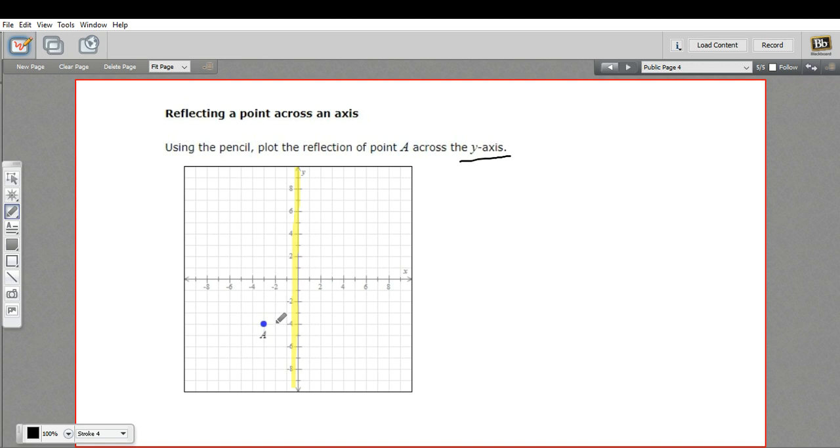So we've got a distance of one, two, three units to get to the surface of the mirror. So we go in the same direction, one, two, three units, and this would be our new point. I'm going to call it A'. That is the image of A reflected across the y-axis.